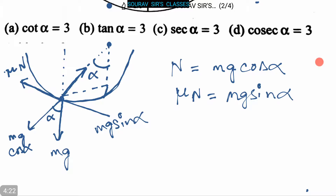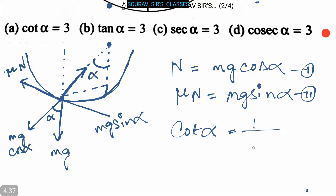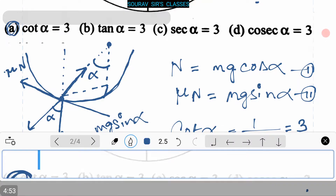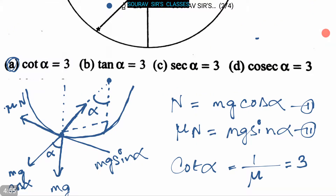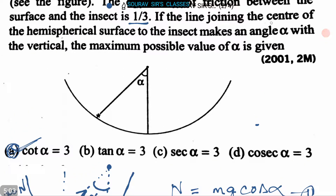Now from equations 1 and 2 we can get that cot α equals cos α / sin α equals 1/μ, which equals 3. So option A, that is cot α = 3, is our correct answer. So if the line joining the center of the hemispherical surface to the insect makes an angle alpha with the vertical, the maximum possible value of alpha is given by cot α = 3.